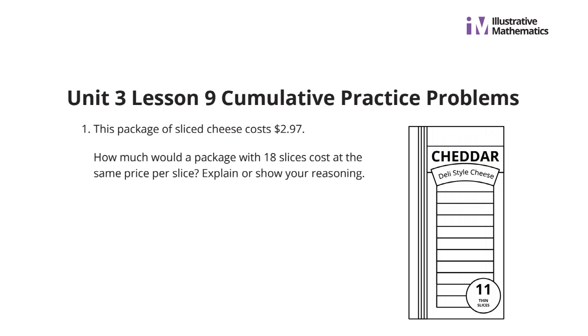This package of sliced cheese costs $2.97. How much would a package with 18 slices cost at the same price per slice? Explain or show your reasoning. Well, if we come up with a table here to help us with slices being one of our columns, and cost being our other, we know that $2.97 will get us 11 slices of cheese. And in case you're wondering where that 11 came from, it's not in the problem itself. All I see is 18. Well, this package has 11 slices.